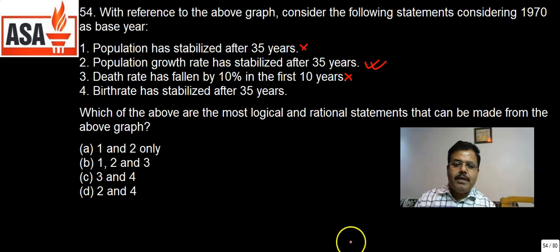So we can say 2 and 4 are correct answers. So in that case the answer is 2 and 4, and therefore the answer is D. Hopefully you got it.